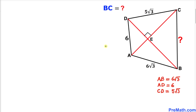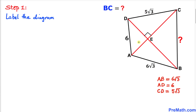Let's get started with the solution. Our very first step is to label the segment lengths: I'll call this side 'a', this side 'b', this side 'c', and this side 'd'.